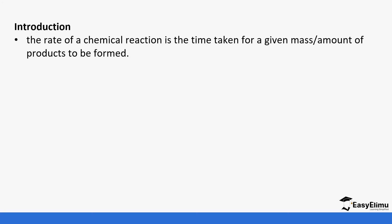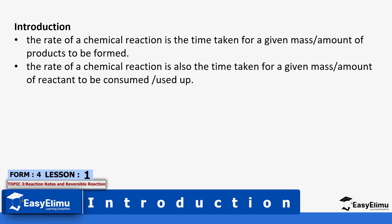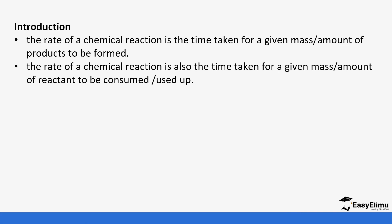The rate of a chemical reaction is the time taken for a given mass of products to be formed, or a given time of a mass of the reactant to be consumed. We know in a reaction we have the reactants and the products. The reactants are being used up and the products are being formed, so the time it takes for either is what we refer to as the rate of a chemical reaction.